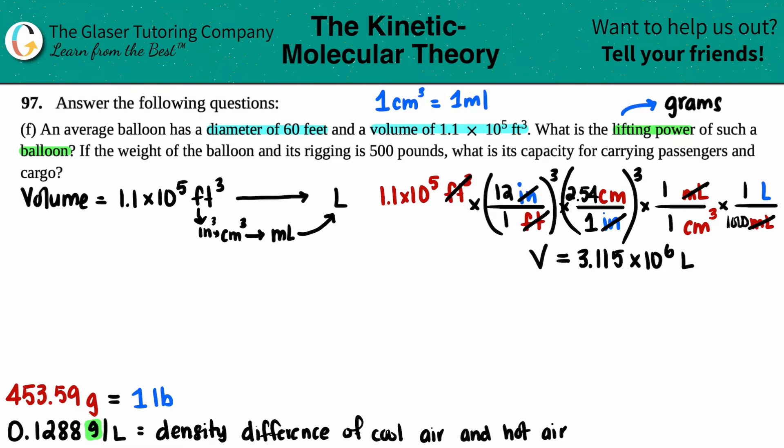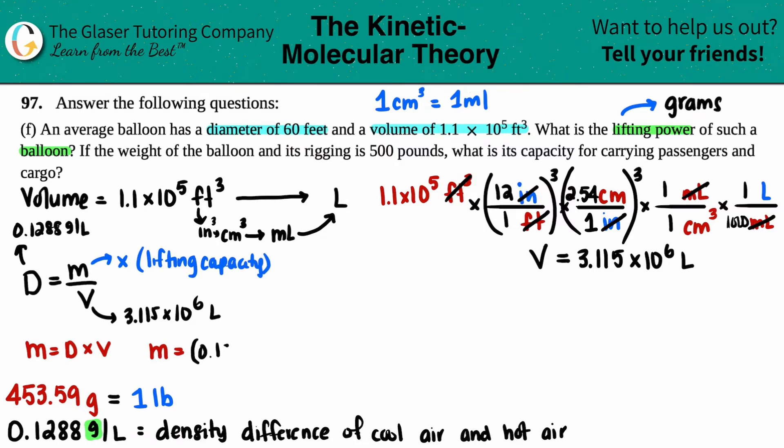Lifting power is in grams. I have my volume and density. Use the density formula: Density = mass/volume. We're solving for mass, that's the lifting capacity. Volume is 3.115 × 10⁶ L. The density from part E is 0.1288 g/L. Rearranging: mass = density × volume. Just multiply those two numbers together.